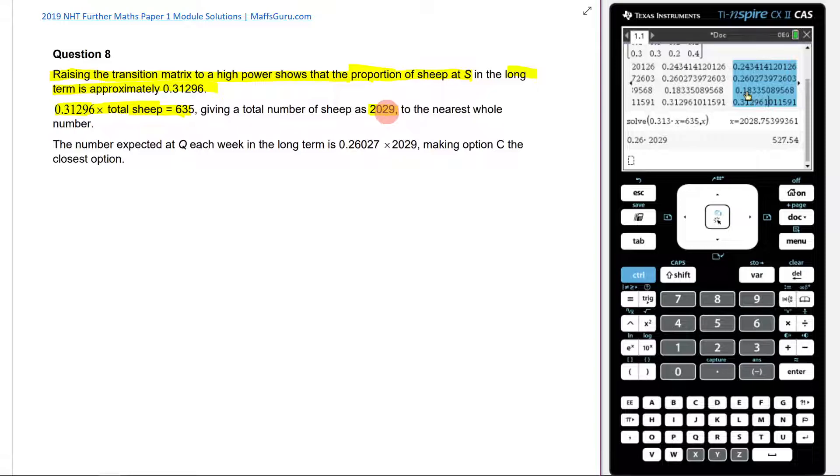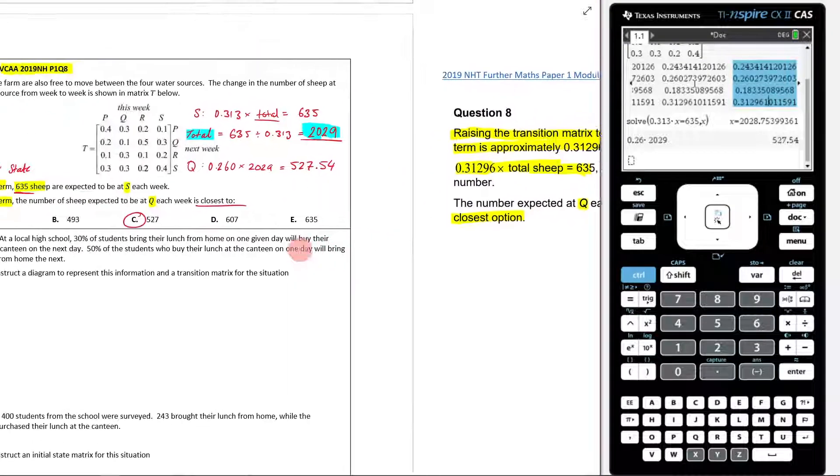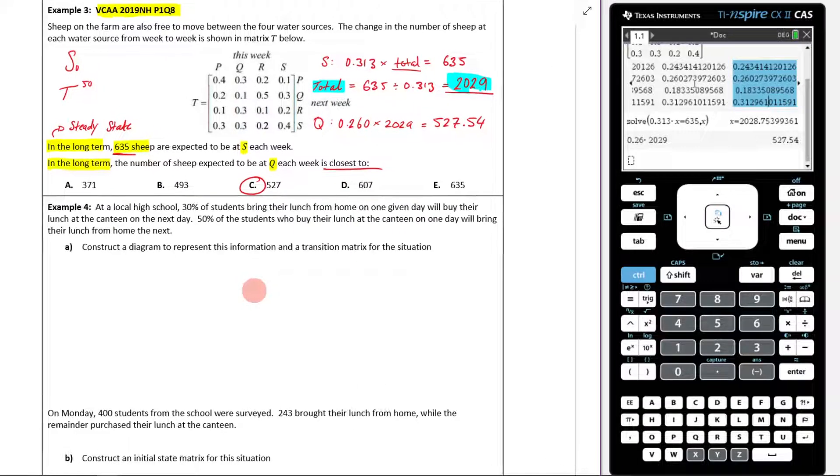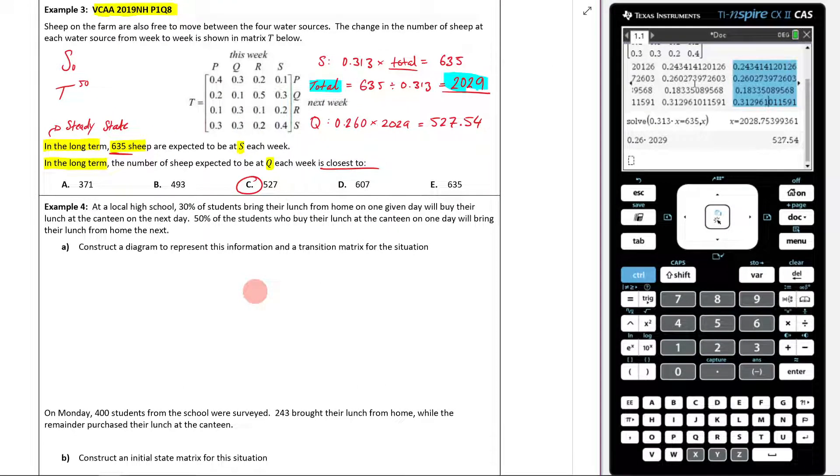Sorry, I'm coughing like crazy. The number expected at Q each week is going to be 0.26 times by 2029, making option C the closest option. So that is how you answer that question there. Hopefully you found this useful. Hopefully you didn't mind all my coughing. I'll see you later.